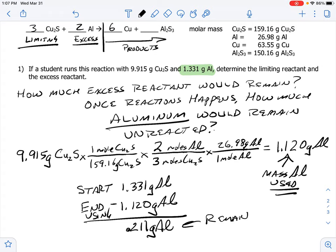Which is why we call this the excess. Excess means you have stuff left over. Well, our mass left over of aluminum is 0.211 grams.